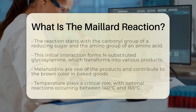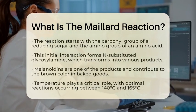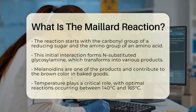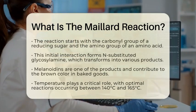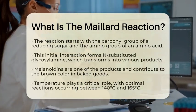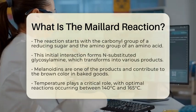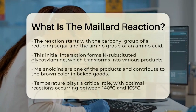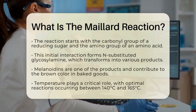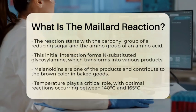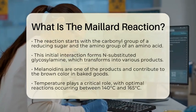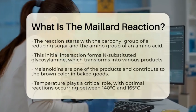Instead, it begins with the reaction between the carbonyl group of a reducing sugar and the amino group of an amino acid. This initial reaction creates a compound called N-substituted glycosilamine. From there, the compound undergoes further transformations, leading to a variety of products including melanoidins, which are responsible for the brown color in baked bread.